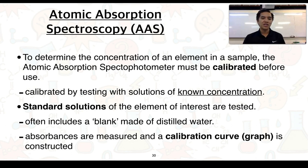Absorptions are then measured, and we construct what we call a calibration curve or graph, and then we use that to determine the presence as well as the concentration of a particular element of interest in our sample.